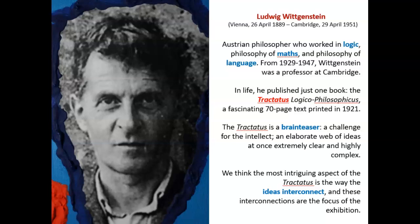In his life, Wittgenstein published only one small book, called the Tractatus — Tractatus Logico-Philosophicus — a fascinating 70-page textbook printed in 1921. The Tractatus is what I call a brain teaser, a challenge for the intellect, an elaborate web of ideas, at once extremely clear and highly complex. We think that the most intriguing aspect of the Tractatus is the way that ideas interconnect, and these interconnections are the focus of our exhibition.